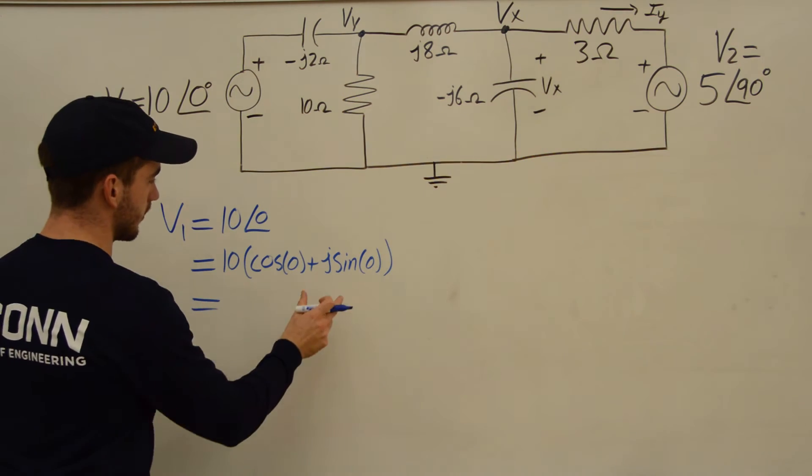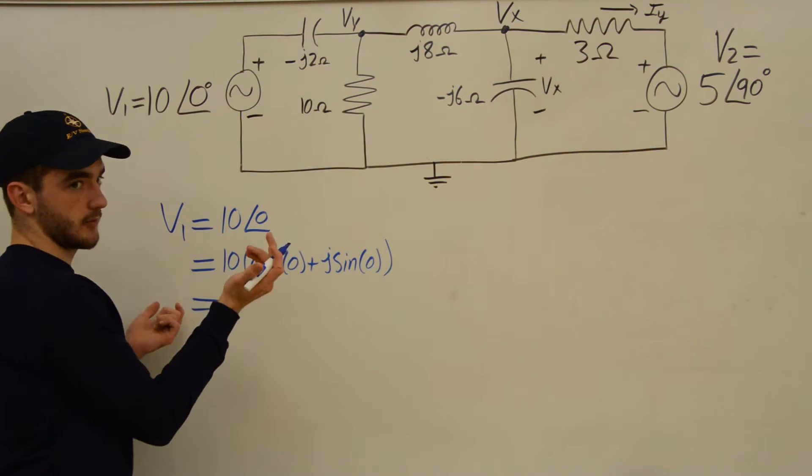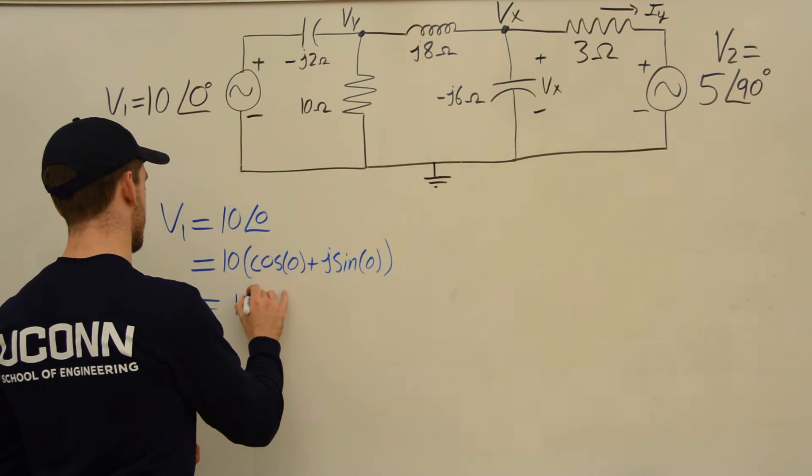So let's see, we have V1 equals 10 with a phase shift of 0, and that equals 10 times cosine of 0, plus J sine of 0. Sweet, and that equals, well, sine of 0 is just 0, and then cosine of 0 is 1. So we'll have 10 times 1, which is 10.